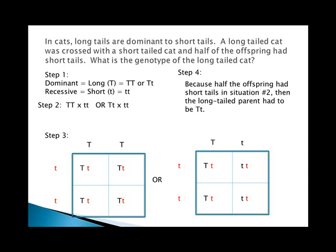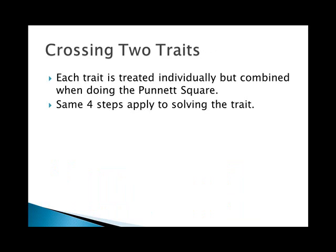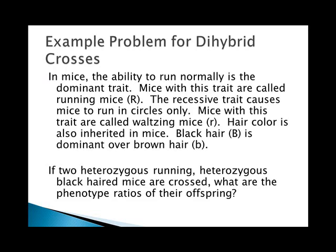These are pretty simple, but now we're going to cross two traits. Each trait is treated individually but combined, using the same four steps. If you have an A and a B, each column heading and row heading must have an A and a B together, because you get one copy from mom and one from dad — but there are multiple combinations. These are called dihybrid crosses.